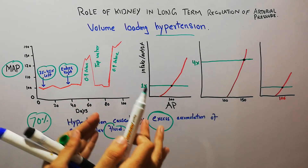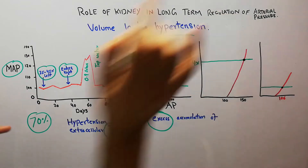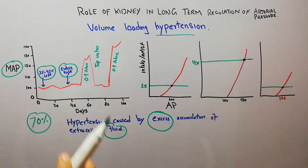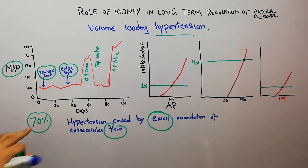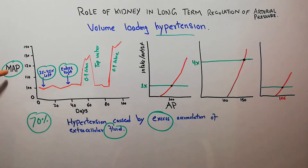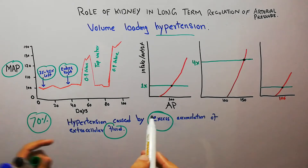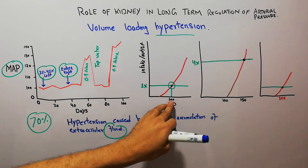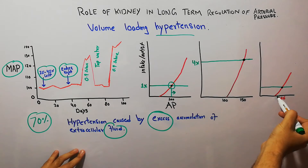The kidneys are important in the long-term regulation of arterial pressure, which is our main topic. After removal of 70% of the kidneys, the renal function curve is disturbed. The mean arterial pressure slightly increases, and the equilibrium point, which was initially at 100 mmHg, shifts slightly to become 106 mmHg.